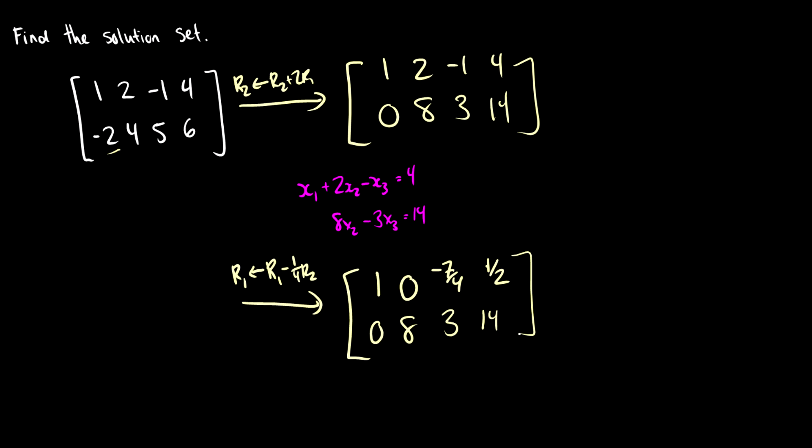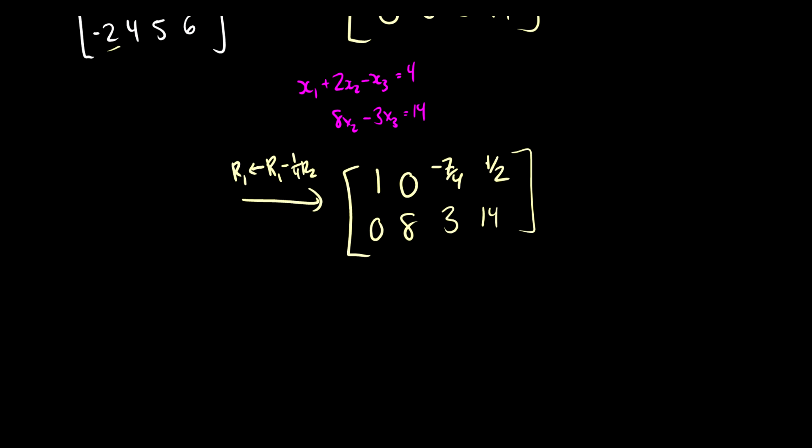So this is a little bit nicer now. It's not nice because of the numbers, but it's nice because now we have x1 and x2 separated from each other. And then we have x3s, which can be free. So here we have x1 minus seven quarters x3 is equal to one half. So we can rewrite this as x1 is equal to one half plus seven fourths x3.